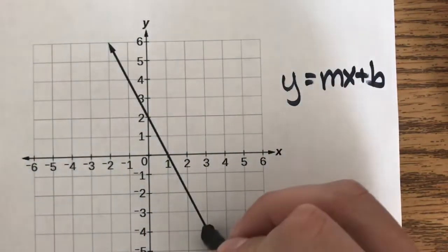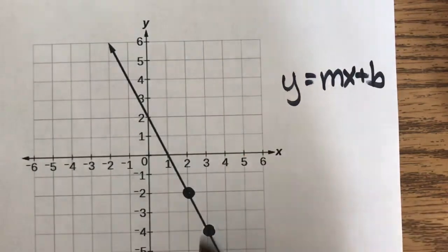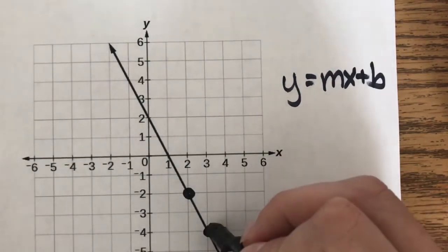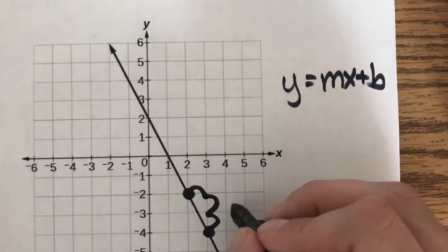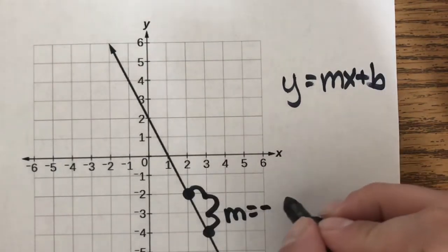So I need two points in order to find the slope. This is a negative slope, so it's up 1, 2 over 1, which means the slope is negative 2 over 1, or just negative 2.